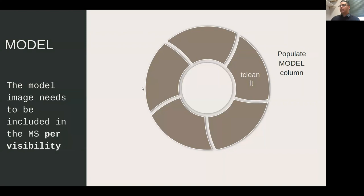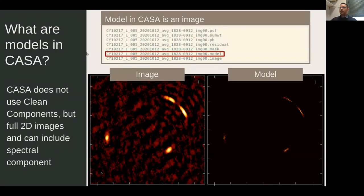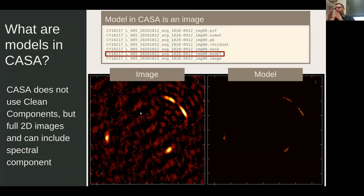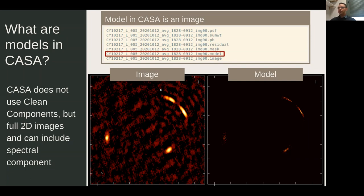The next step is to populate the model column using tclean. When tclean runs, it produces several images including the model image. If you set savemodel equal to 'modelcolumn', at the end tclean will save the model column and fill it with the Fourier transform of the model image — calculated for each visibility in your dataset. In CASA, the model is a 2D image (not just clean components), with the same size as the original image, embedding the model in pixel values.